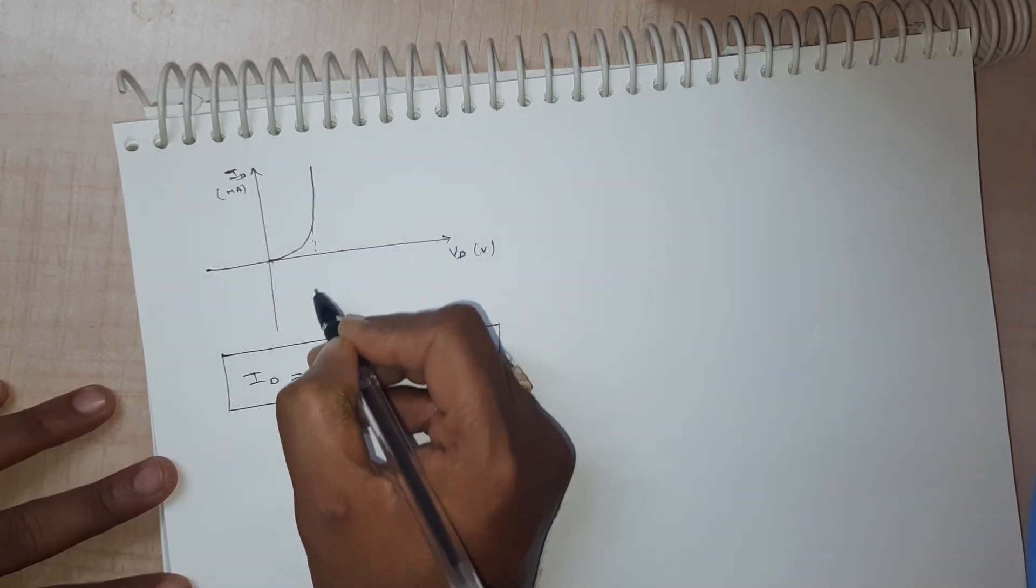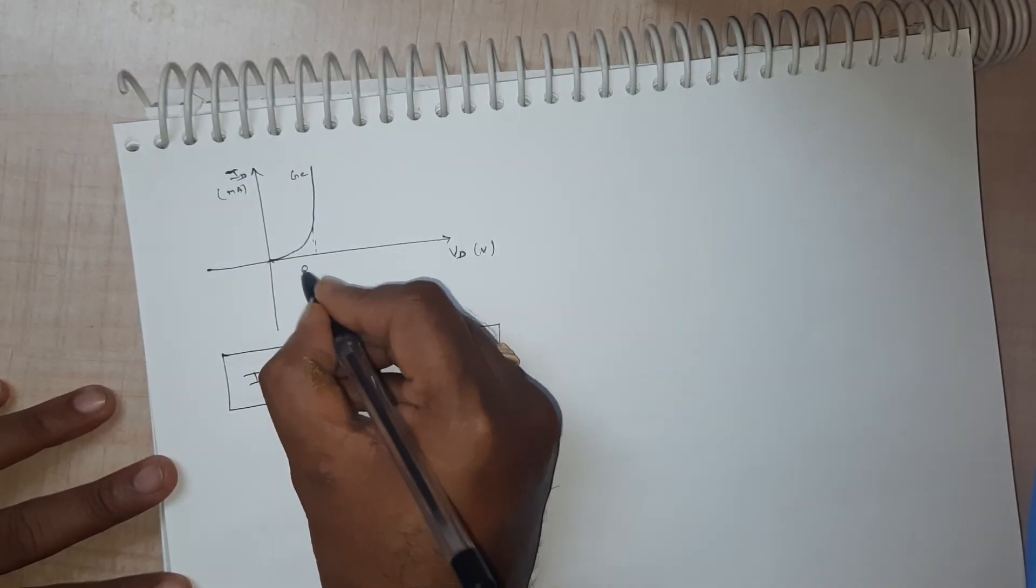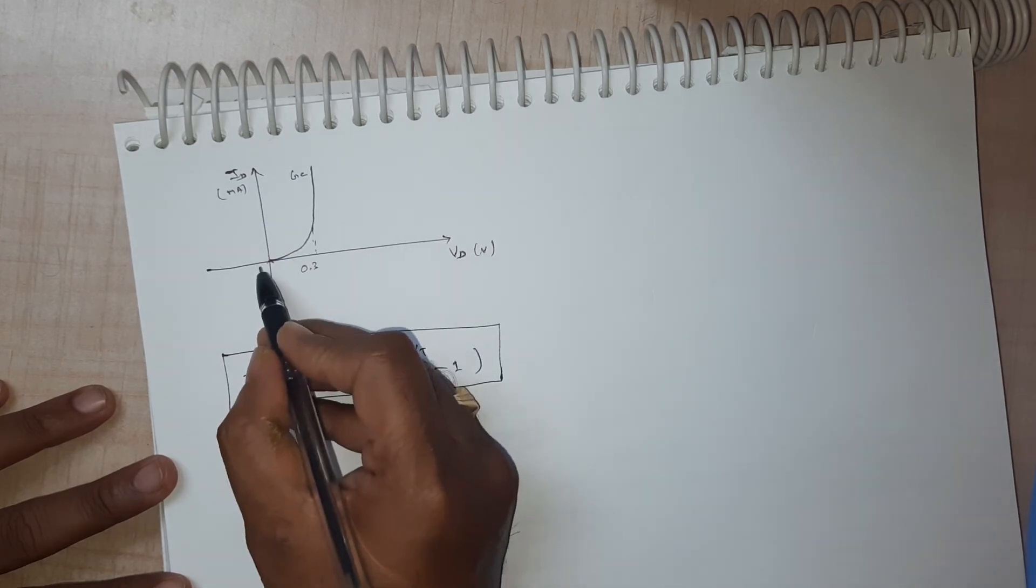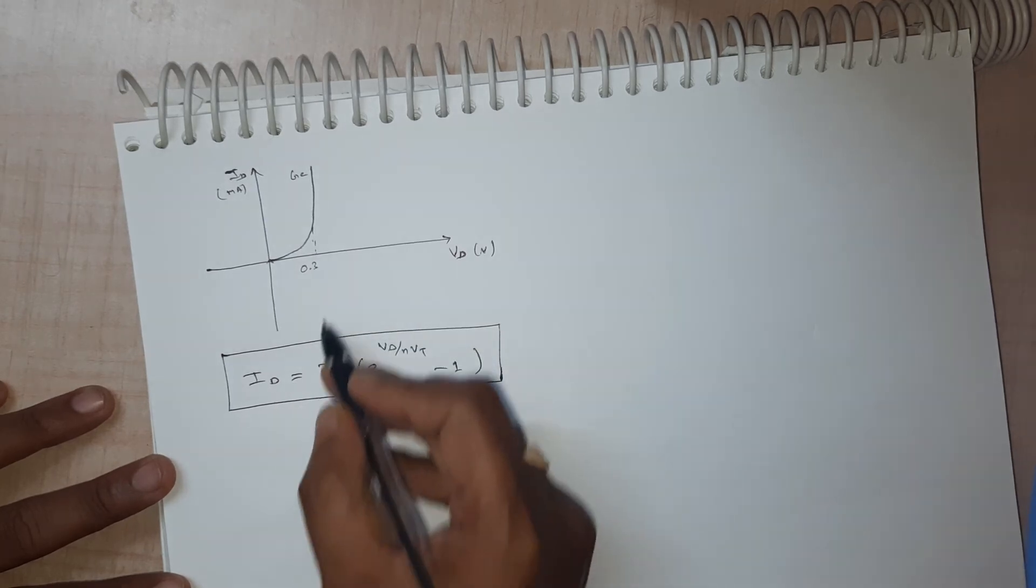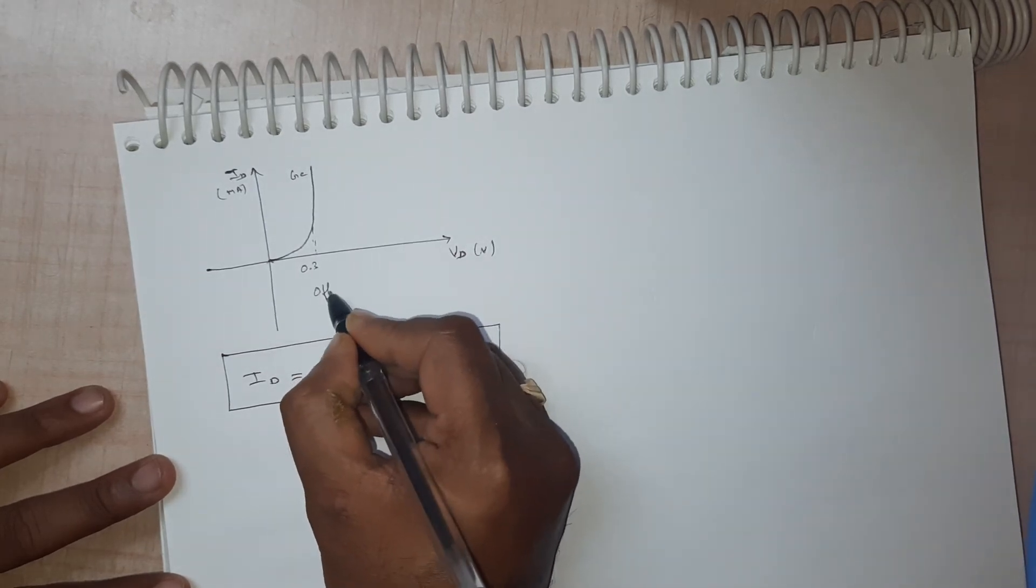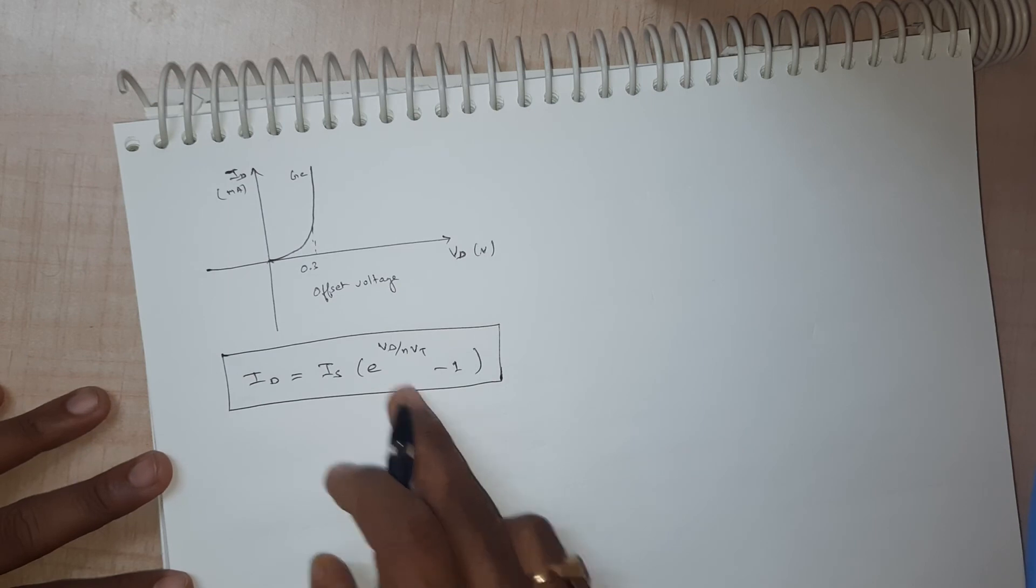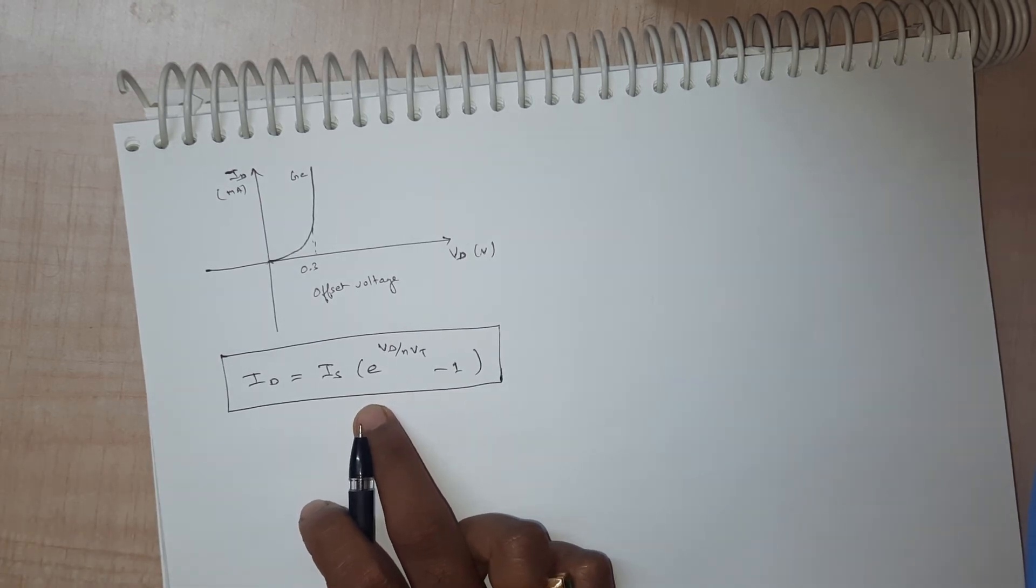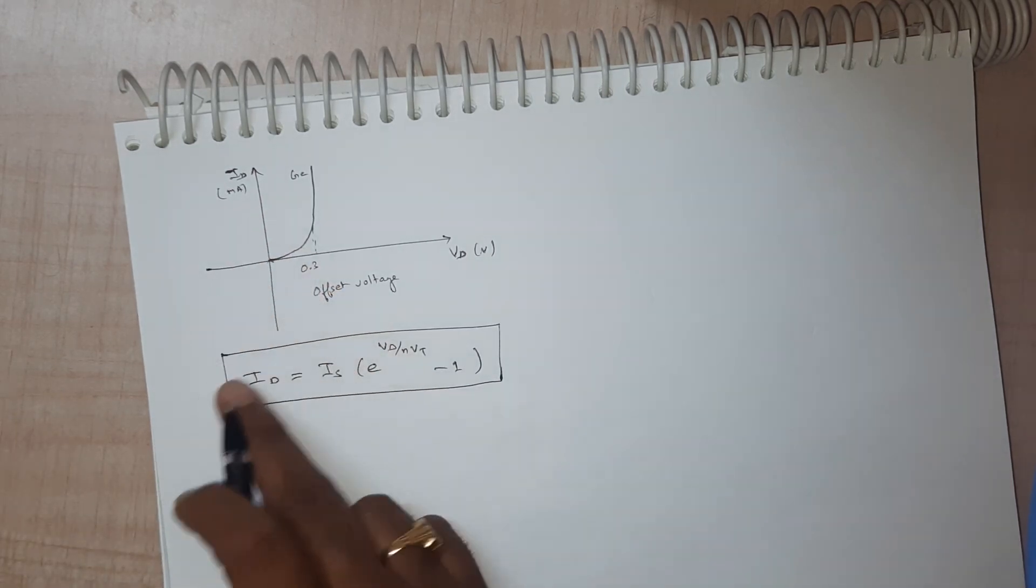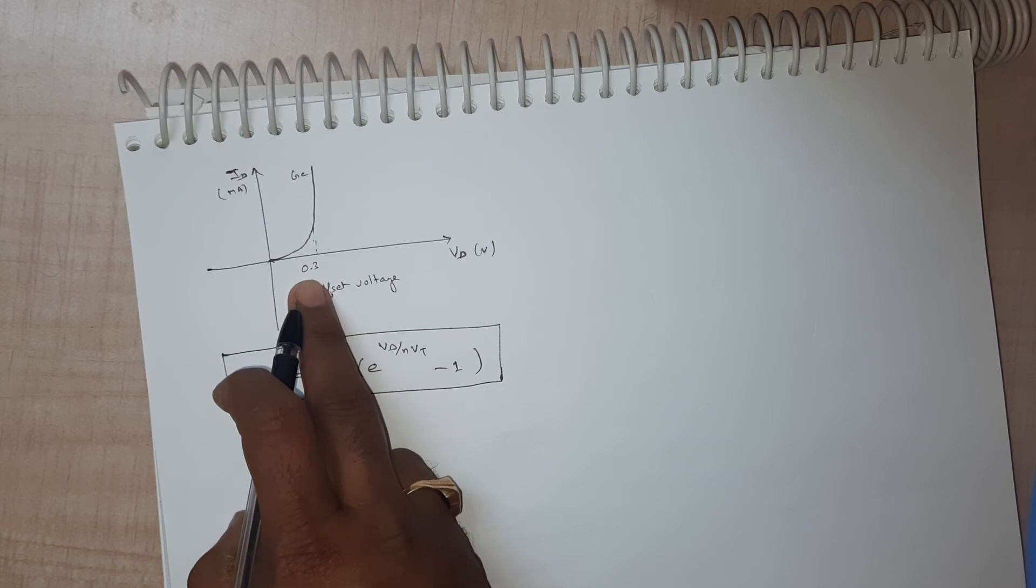For particular germanium material of a semiconductor diode is 0.3 volts. Whenever the voltage is applied the current is not increased until the applied voltage reaches 0.3 volts. So this is the offset voltage. Ideally as soon as you apply the voltage your current should increase, that's for an ideal condition. But since the diodes are practically made, that is not the case. Your diode current will not increase until the applied voltage crosses the offset voltage of 0.3 volts.